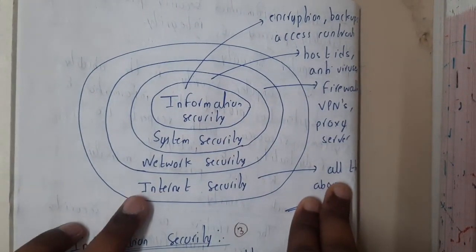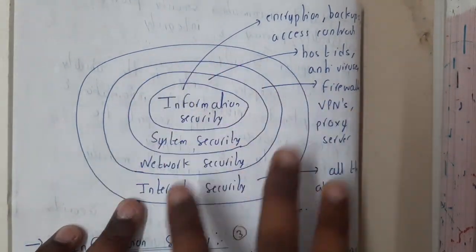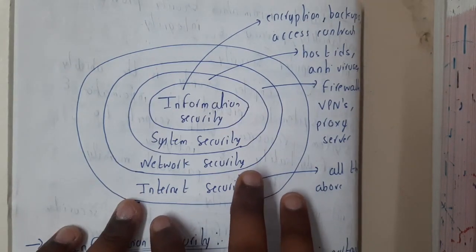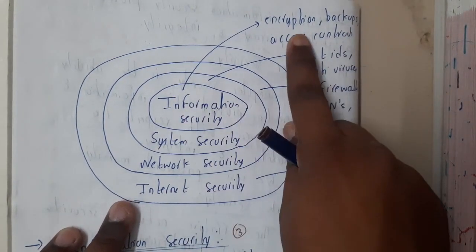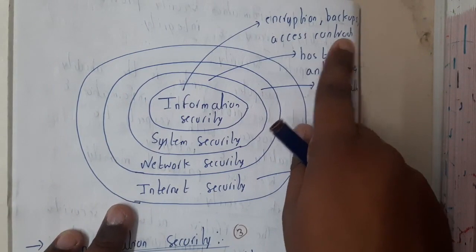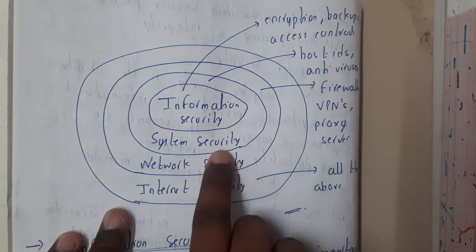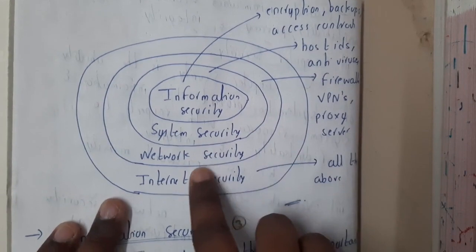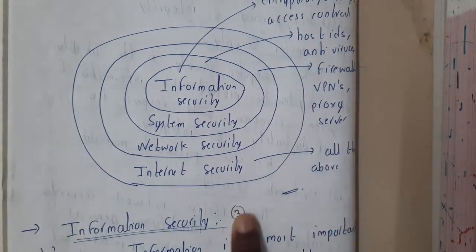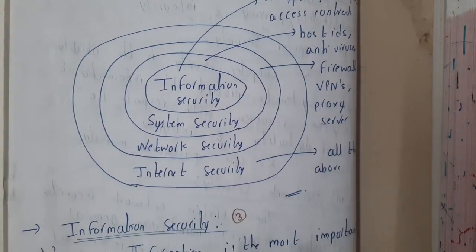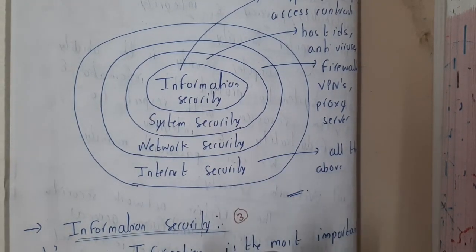To summarize with an example: information security is a combination of all the things. In information security we use encryption, backups, and access controls. In system security we use host IDS and antiviruses. In network security we use firewalls, VPNs, and proxy servers. In internet security we use all of the above.